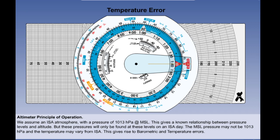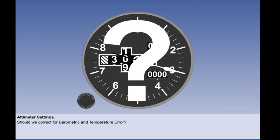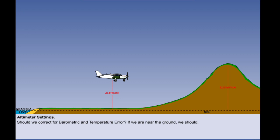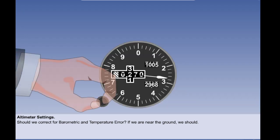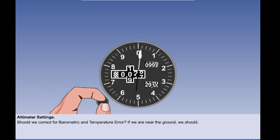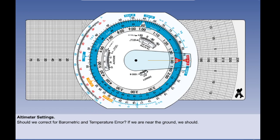So we now need to decide what to set on our altimeter. Should we correct for barometric and temperature error? If we are near the ground and there is a danger of collision into terrain the answer is obvious — of course we should, especially in fog and low cloud. The vertical distance of hills, mountains, ridges and tall structures is given as an elevation on our maps. We need to know our true altitude in order to ensure safe clearance. We must make sea level our datum by setting the subscale correctly, and if the temperature deviation from ISA is significant enough we must correct for temperature error.